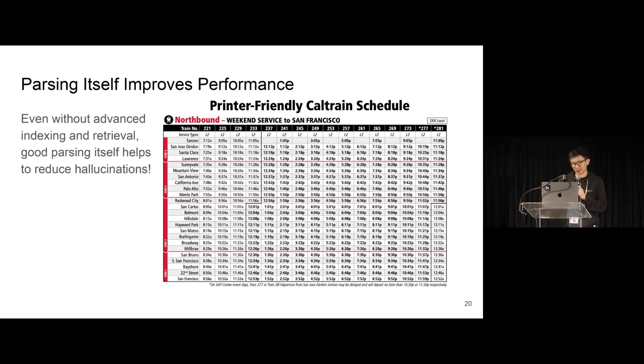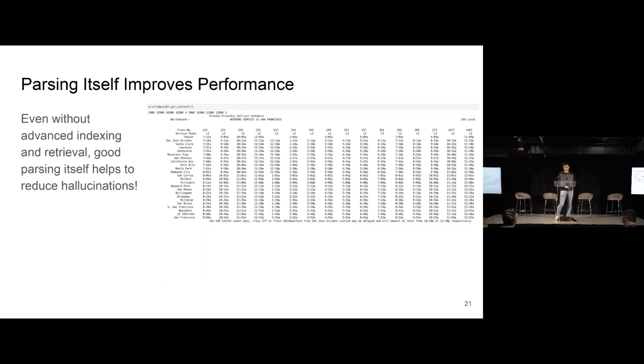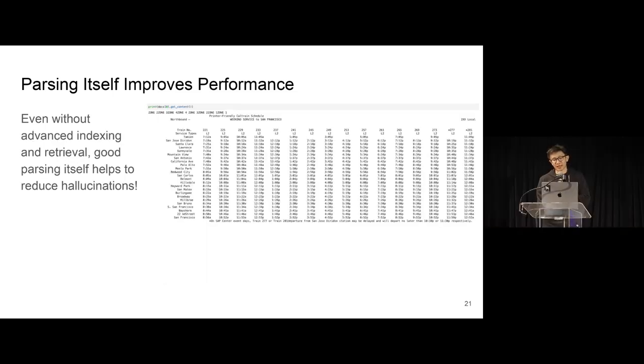So what we did was we took the Caltrain schedule, the weekend schedule, and we ran it through, for instance, LlamaParse, and we get back a well spatially laid out text representation of this schedule. It turns out models like OpenAI and Anthropic and some of the state-of-the-art LLMs out there, they understand text formatting pretty well. So when things are well spaced and well aligned, they can actually answer questions over this text a lot better than if that text was not formatted well.